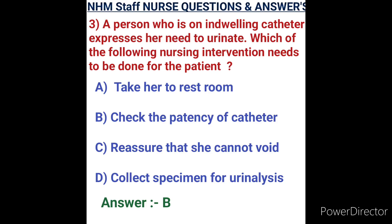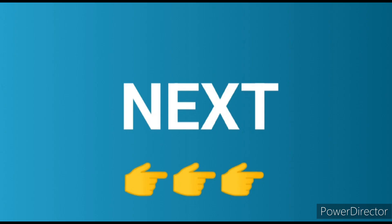Question number three: a person with an indwelling catheter expresses the need to urinate. Options: A) take her to the restroom, B) check the patency of the catheter, C) reassure that she cannot avoid it, D) collect specimen for urine analysis. Option B is correct. Check the patency of the catheter — if there is any blockage it should be flushed. Check the position of the catheter and ensure the drainage bag is maintained below the bladder level in all patient positions.